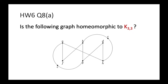When we perform these two kinds of operations, we can only add degree-two vertices or remove degree-two vertices. A degree-two vertex means a vertex that has degree exactly two.